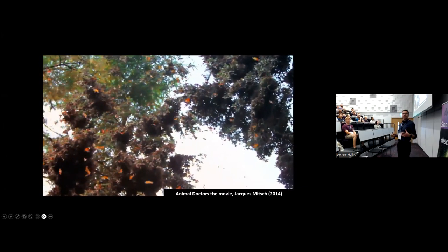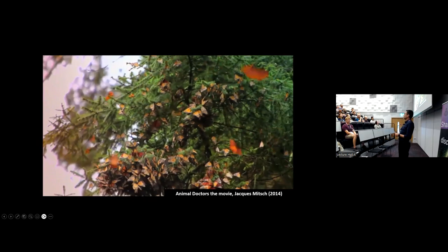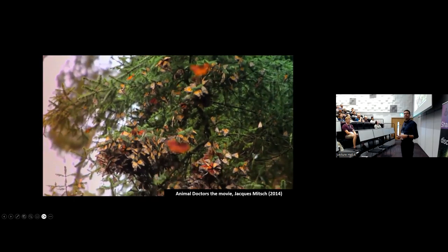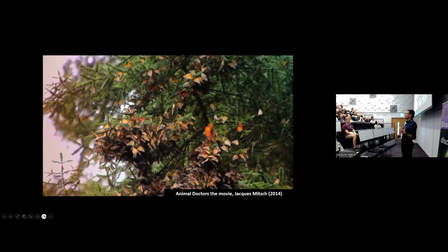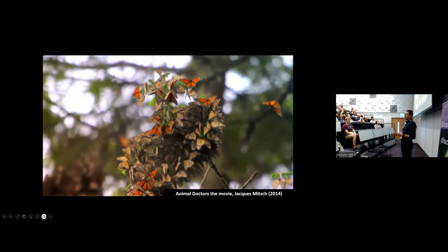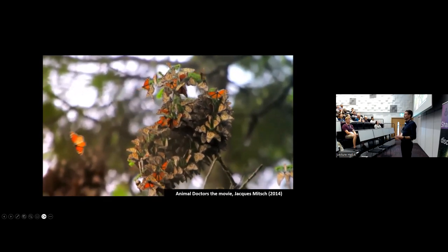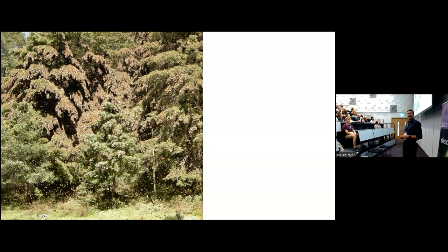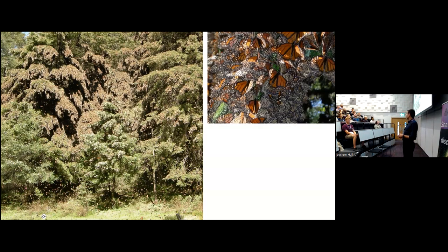Monarch butterflies are very well known for their migration. Monarchs that migrate to Mexico from North America every year go to very small patches of forests in central Mexico, where literally tens of millions — up to hundreds of millions — of monarchs congregate and spend the winter there. It's really impressive. When you see these trees, they're literally covered in butterflies; all the specks in the foreground are butterflies. It's really layer upon layer of butterflies. It's one of those spectacles of the natural world.